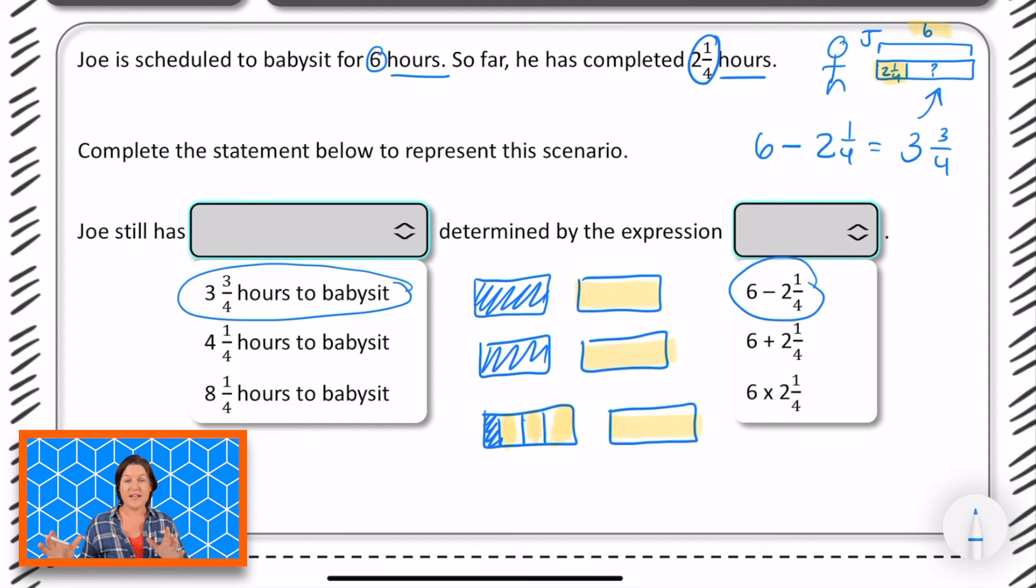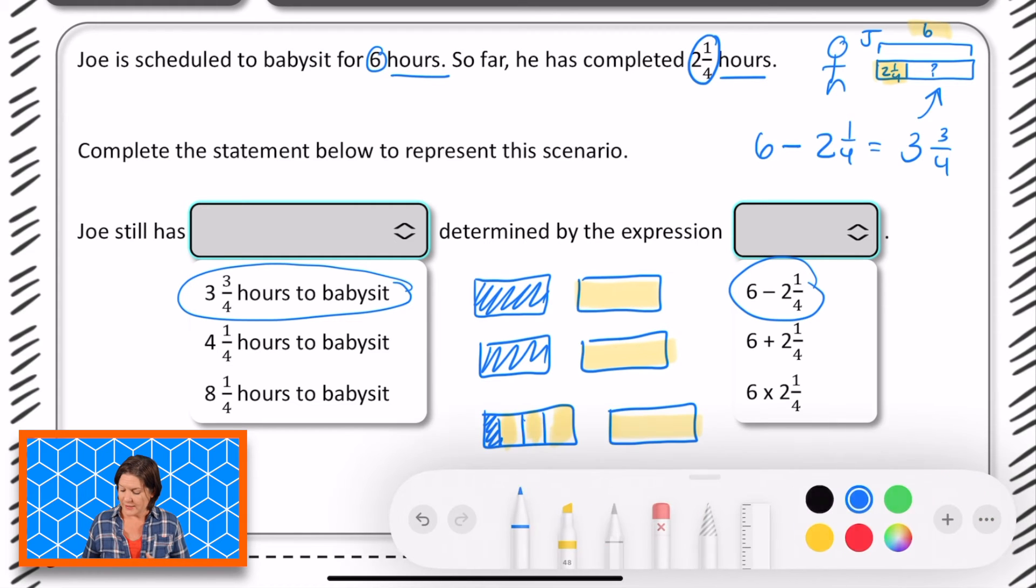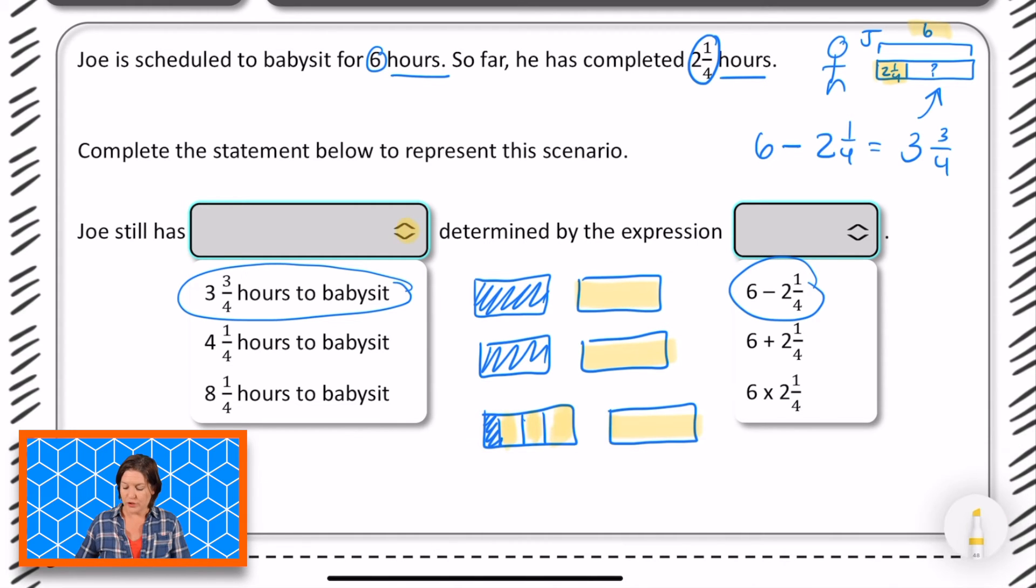So what we would do in this kind of case, because this would be on a computer-based test, what you would do is click these little arrows right here to drop down that menu. And in that menu you would select or click the answer like the ones that we have circled. So again you drop it down, you select it, and then usually what it will do is populate the answer there. It might not, but it'll at least show you which answer you're choosing.